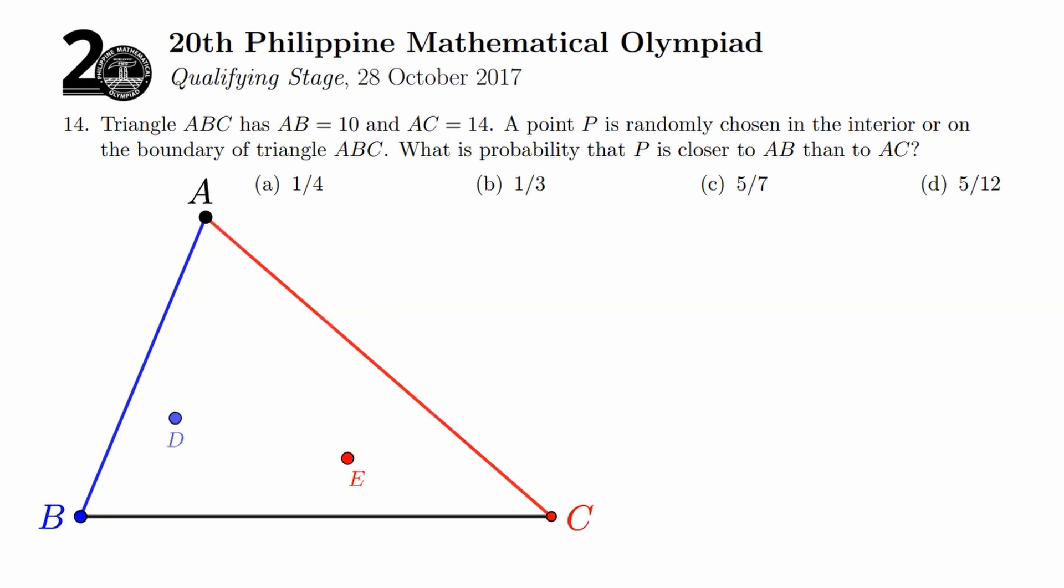Well, if we're talking about closer, then that means we are talking about distances. The distance of D from the two sides are the lengths of these perpendicular segments from D to those two sides. Now, as you can see, the perpendicular from D going to AB is shorter than the one from D to AC. That's why D is closer to AB. On the other hand, the reason E is closer to AC is because the perpendicular from E going to this side is shorter than the perpendicular from E to AB.